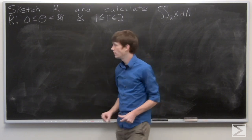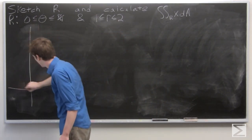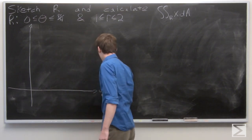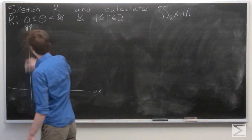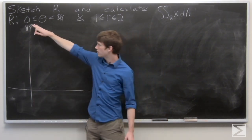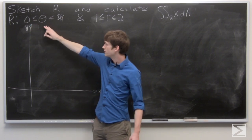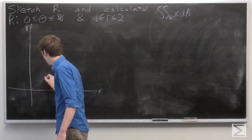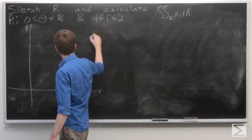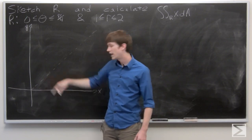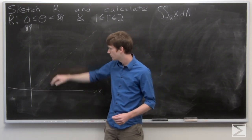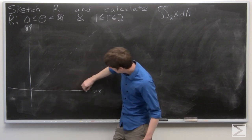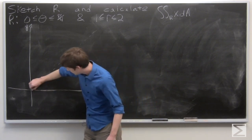So first we want to sketch our region R. Our region is bounded from theta equals 0 to pi over 4. Pi over 4 is the line y equals x or halfway between 0 and pi over 2. And theta equals 0 is the positive x-axis.